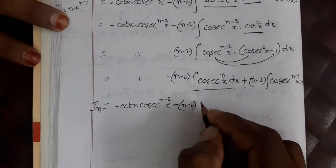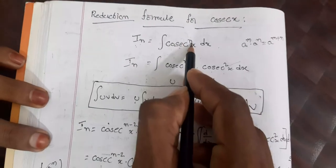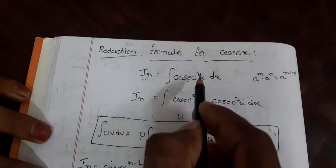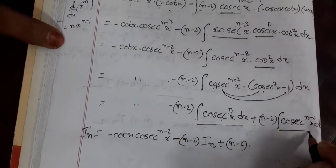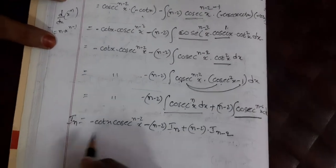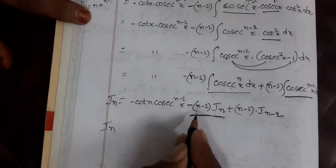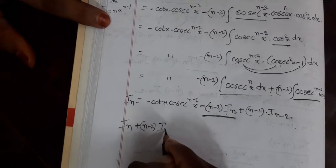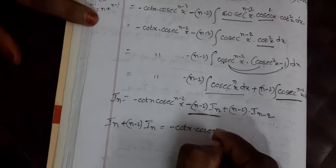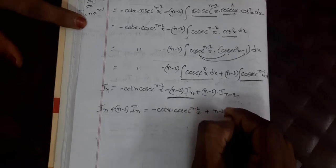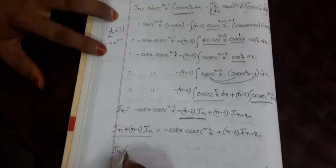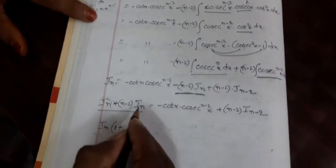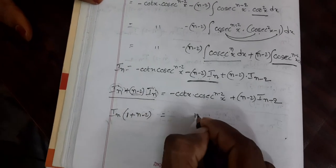Collecting I_n terms: I_n on the left side plus (n−2)·I_n on the right gives I_n + (n−2)·I_n = (1 + n − 2)·I_n = (n−1)·I_n. So (n−1)·I_n = −cot(x)·cosecant^(n-2)(x) + (n−2)·I_(n-2). We take I_n common and divide both sides by (n−1).